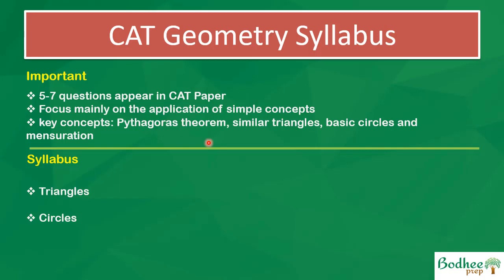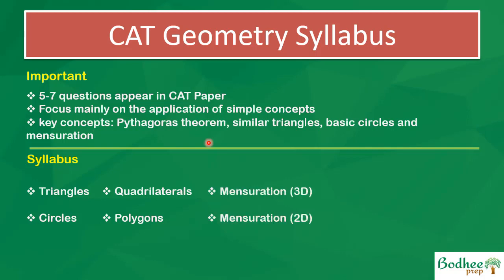Circles are very important — things like intersection of circles, tangents, secants, chords and their properties are key. Then come quadrilaterals: squares, rectangles, parallelograms, rhombuses, and related shapes. For polygons, we consider pentagons, hexagons, octagons and so on — all their properties, areas, and how to inscribe circles are important. Then we come to mensuration, which covers both 3D (three-dimensional) and 2D (two-dimensional) problems.